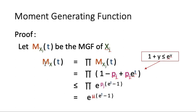In other words, we have proven the theorem: the moment generating function of X is less than or equal to e to the power mu * (e^t - 1). The moment generating function is needed in order to obtain the Chernoff bounds.